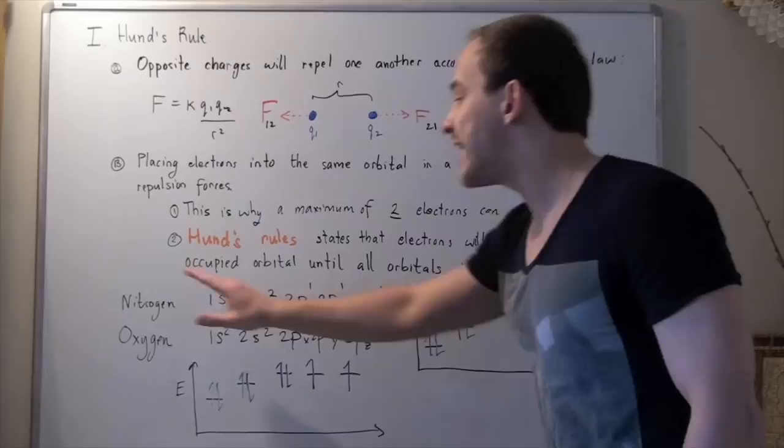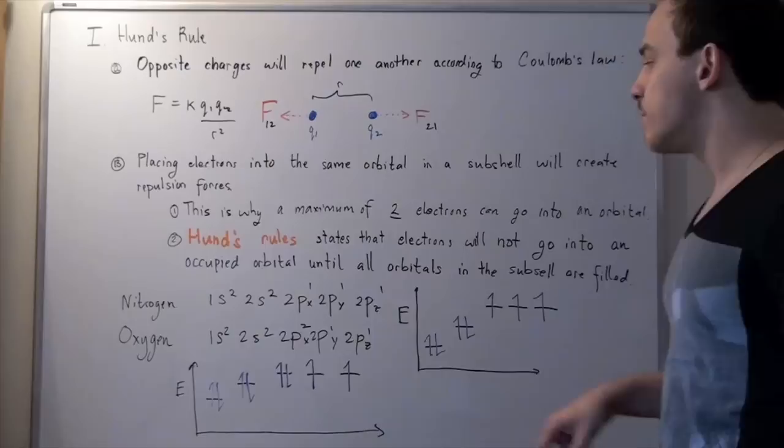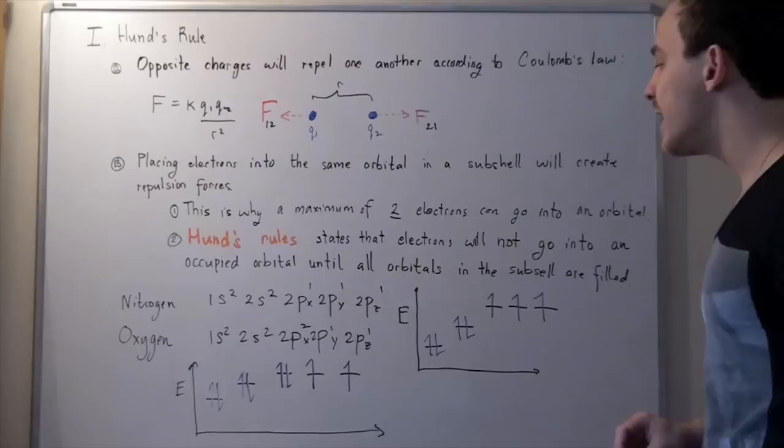So, let's look at nitrogen. So, here's my energy axis, and here's just my x-axis. Now, this bar represents my 1s orbital. This black bar represents my 2s orbital. The reason this one is lower than this one is because the 1s orbital is at a lower energy state than the 2s orbital.